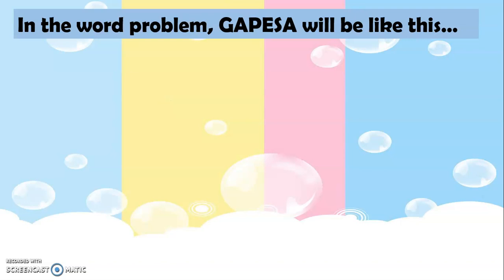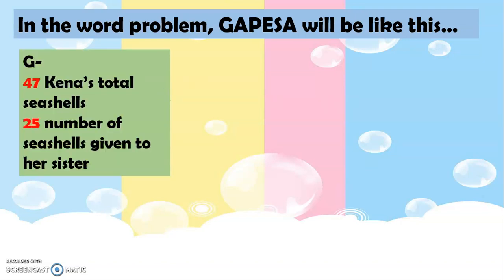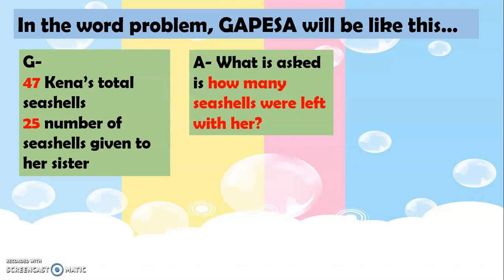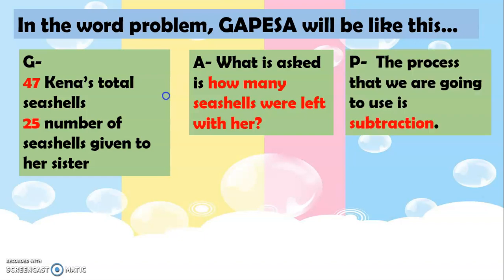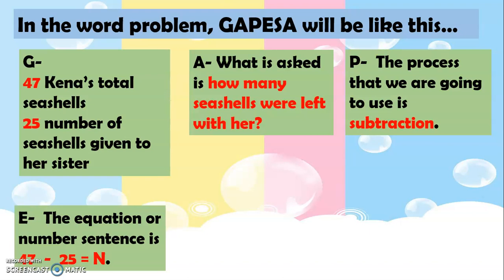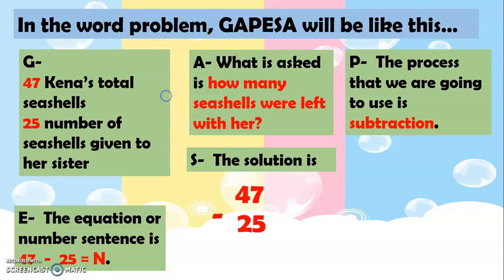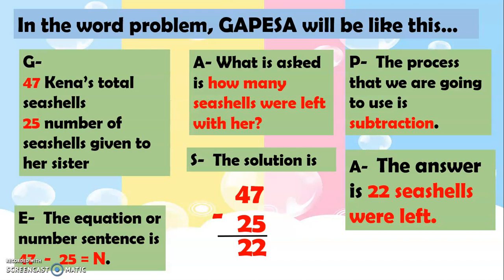In the word problem, GAPESA will be like this. For G: 47 was Kina's total number of seashells, and 25 was the number of seashells given to her sister. For A: what is asked is how many seashells were left with her. For P: the process is subtraction. For E: the equation is 47 minus 25 equals N. For S: 7 minus 5 is 2, and 4 minus 2 is 2. The answer is 22 seashells were left.